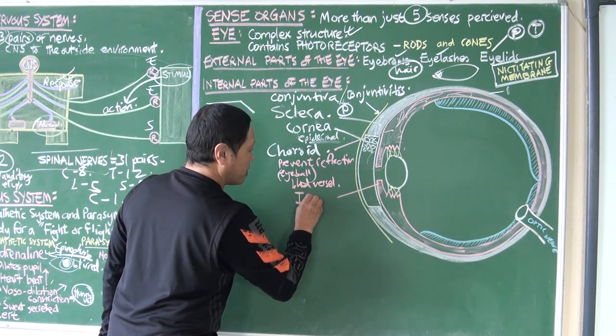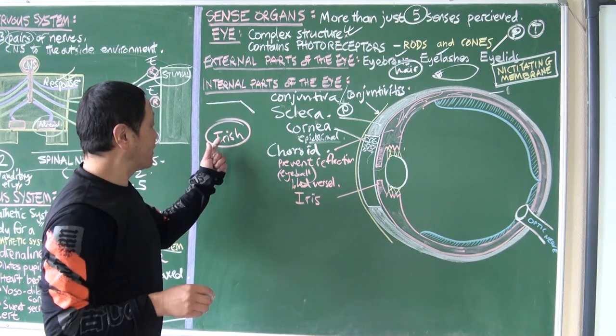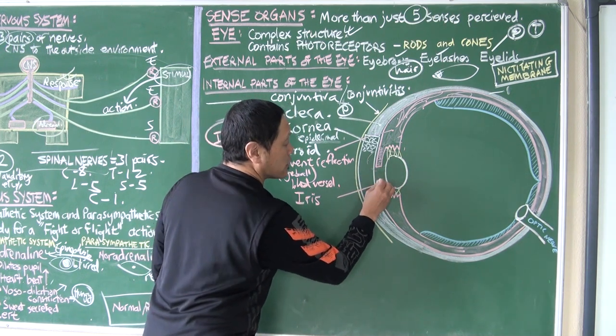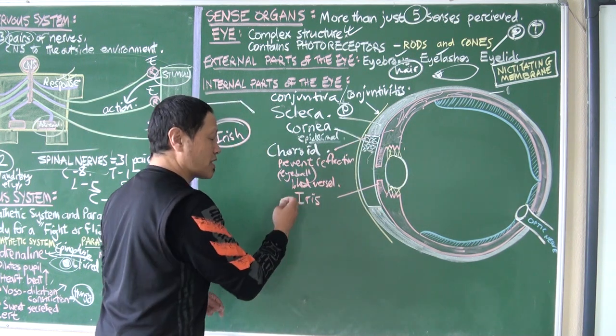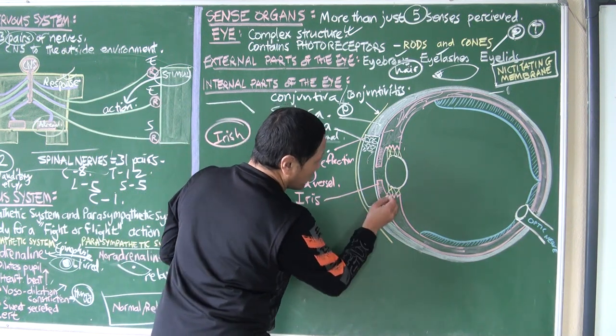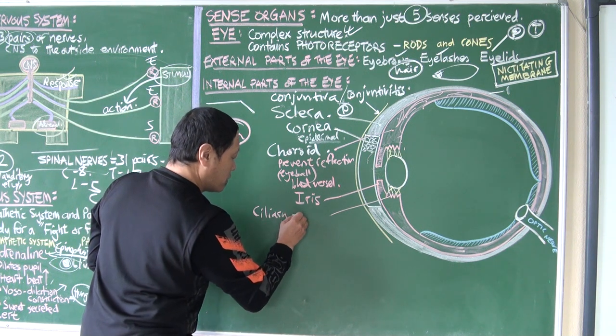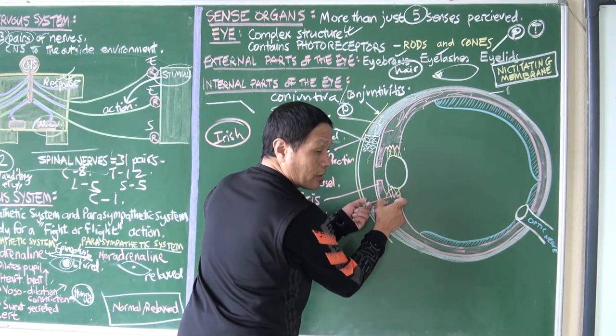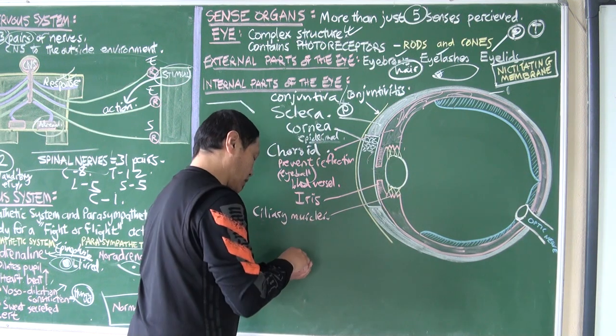The choroid, right behind the cornea, modifies itself to form two structures. One is this one, the other is this. This is called iris - not Irish, a guy from Ireland - the iris. The iris can close, it can really shorten or it can widen up, which we shall discuss later. And the second structure is this one, known as the ciliary muscles. The contraction of ciliary muscles will change the shape of the lens. This is the lens.